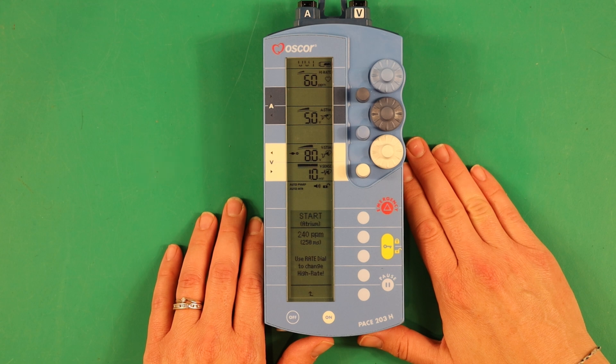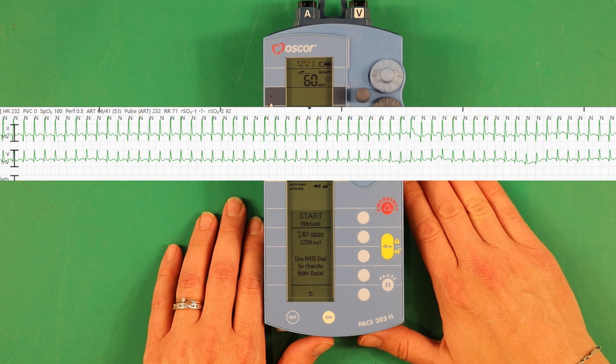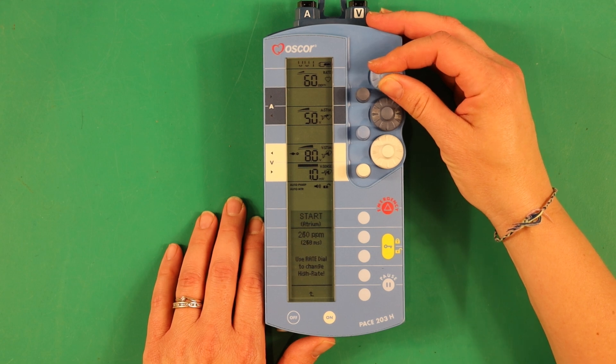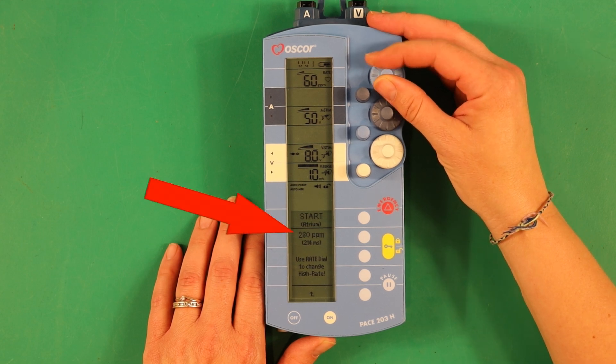Now we need to decide what rate we want to pace at. There is no exact science to picking a rate, but you need to pace faster than the arrhythmia rate by at least 10%. This pacemaker can pace as fast as a thousand beats per minute. Turn the rate dial to set your rate. Notice the number at the top doesn't change. Read the rate down here.